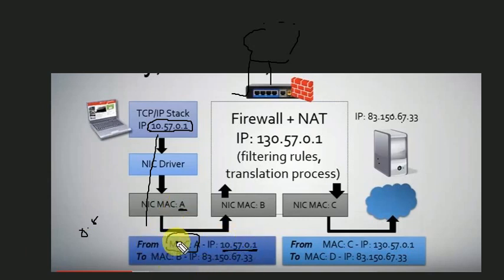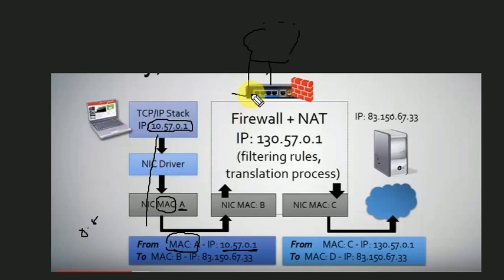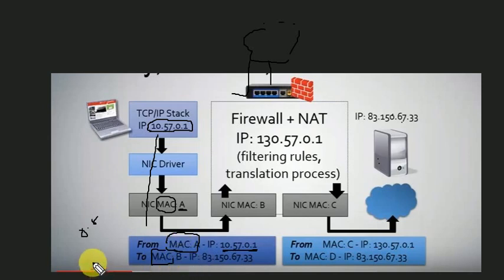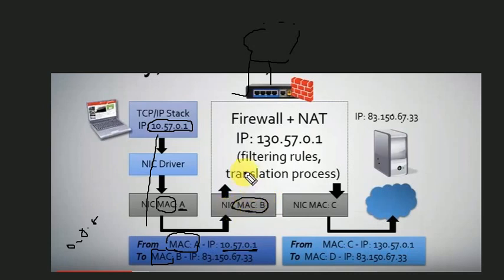In the layer 2 frame, we have a source MAC and a destination MAC. The destination MAC is MAC B, which is the firewall MAC, because my destination IP is 8.8.8.8 which is outside the local network, so the packet is sent to the firewall's MAC.